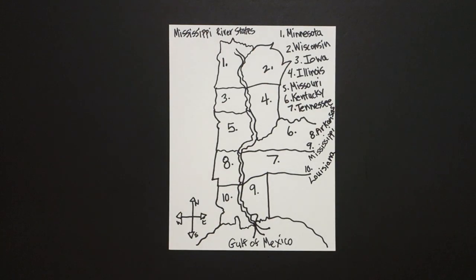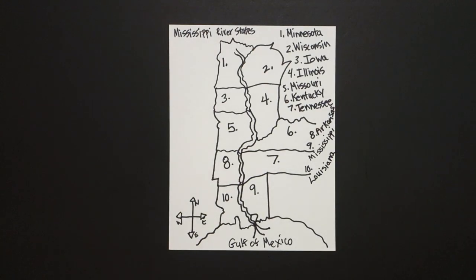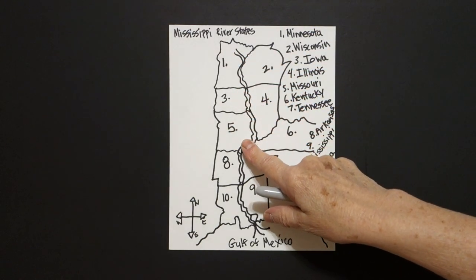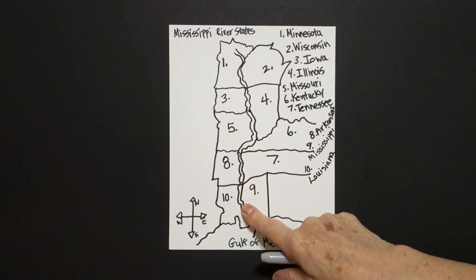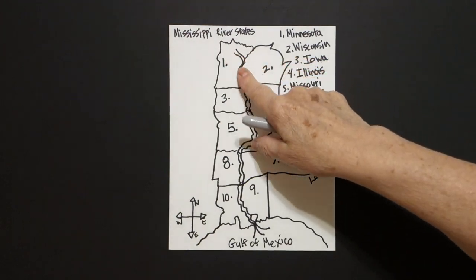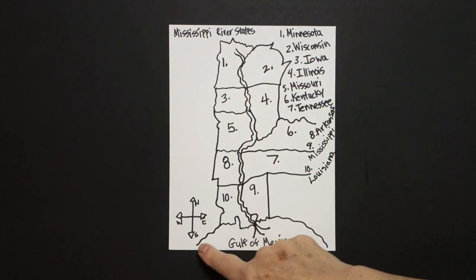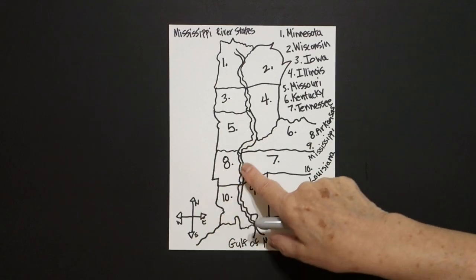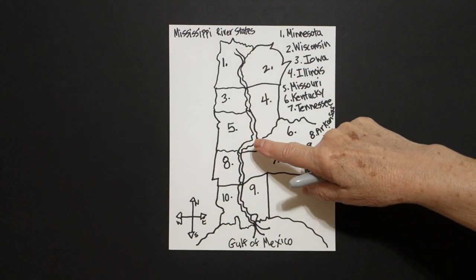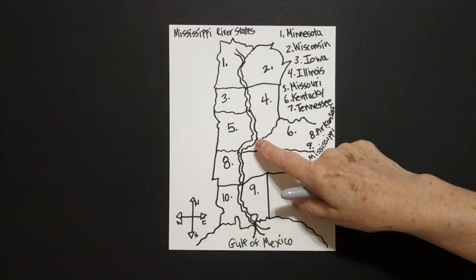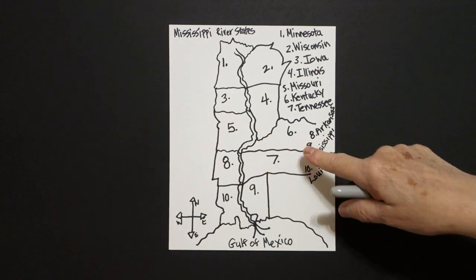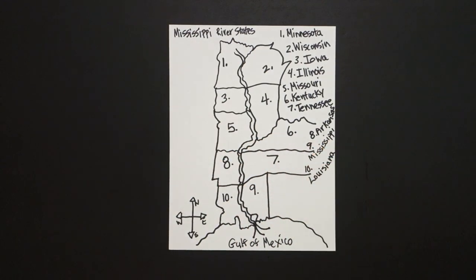The Mississippi River was a major transportation river for people to ship their goods down south and bring them up north. People would talk about whether something was west of the Mississippi or east of the Mississippi, so it's a very important designator.